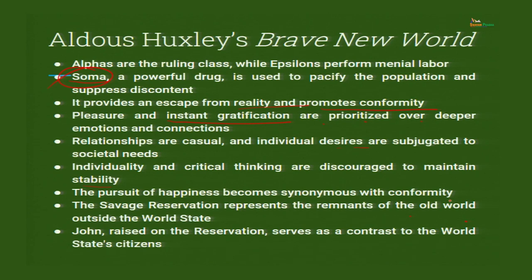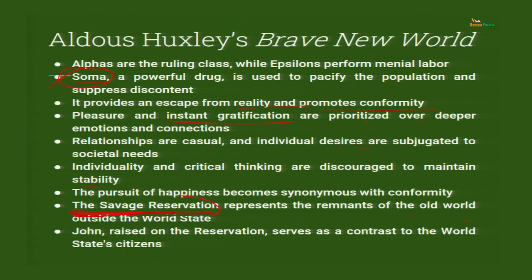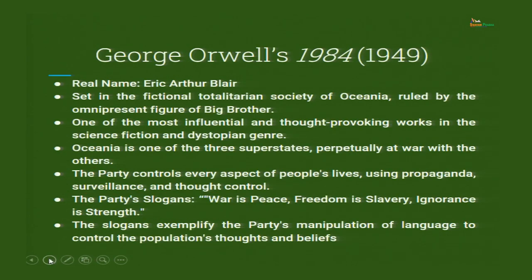The savage reservation represents the remnants of the old world outside the World State — outside the geographical boundary, existing as resistance to that government. The character John, raised on the reservation, serves as a contrast to the World State's citizens. So there are characters contrasting each other. If you go through the novel, you will find it a fantastic read — I urge you to go through it.